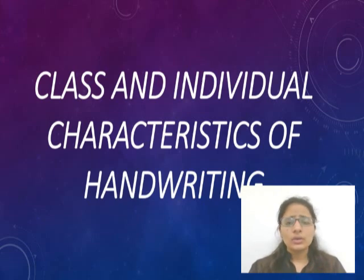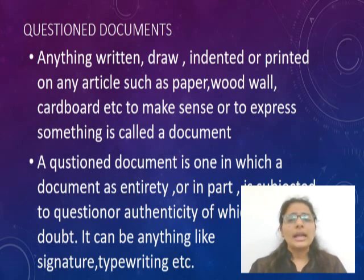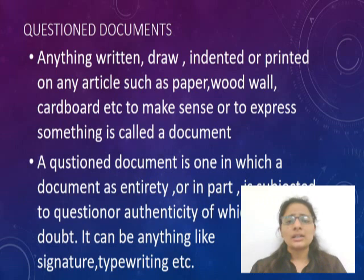Before we go through this, we should first know what a document is and what a questioned document is. Anything written on paper, a wall, or any other surface is known as a document. A questioned document is one whose authenticity is in doubt — for example, a check or a suicide note where something is written and its authenticity is uncertain.